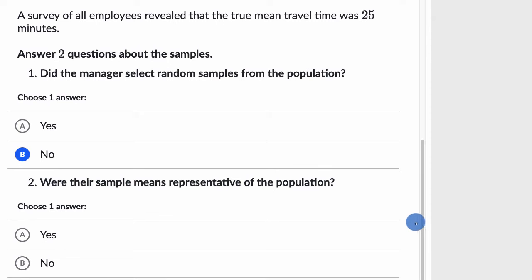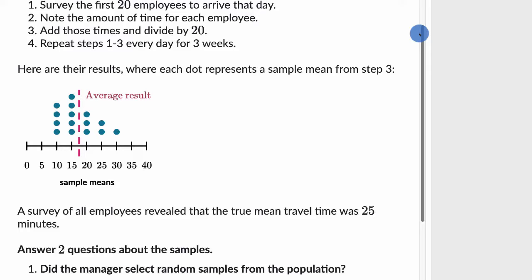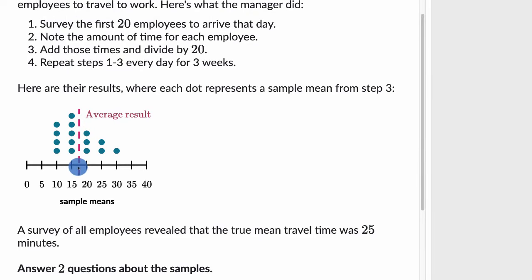Were their sample means representative of the population? Well, they actually told us what the population mean is. They say the true mean travel time was 25 minutes, and we can see that the mean of what the manager did was between 15 and 20 minutes right over here. So I would have assumed that it wouldn't have been representative just based on how they did the sampling.